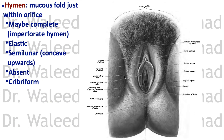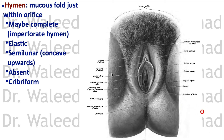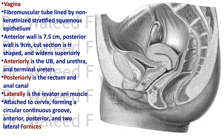The hymen is a membrane or mucous fold just within the orifice. It may be complete, imperforate, elastic, semi-lunar with a concave border upward, absent, cribriform, or of many other forms. The doctor should pay attention to these different criteria when examining a female patient.